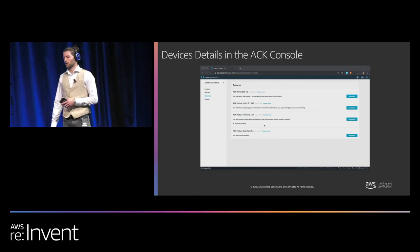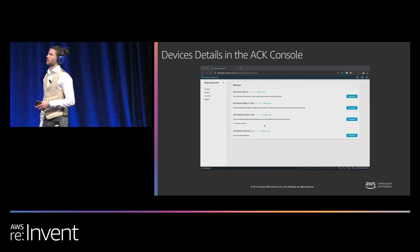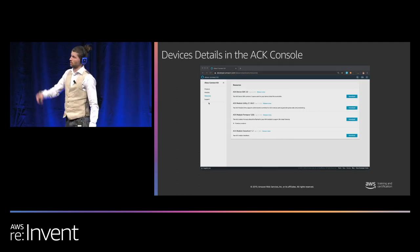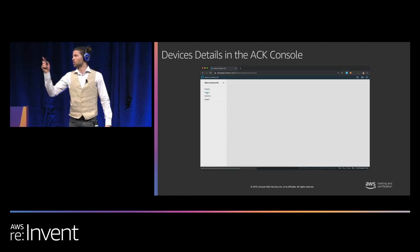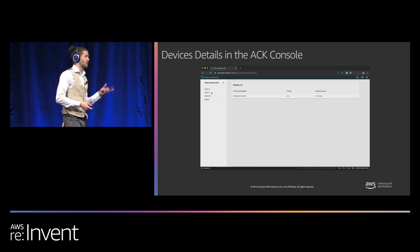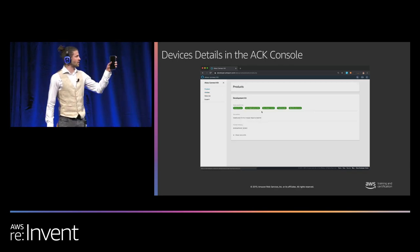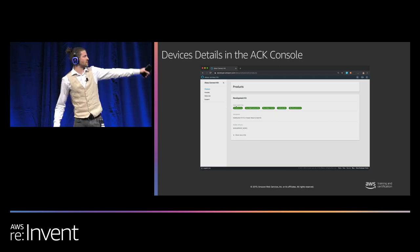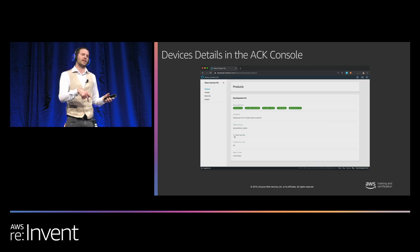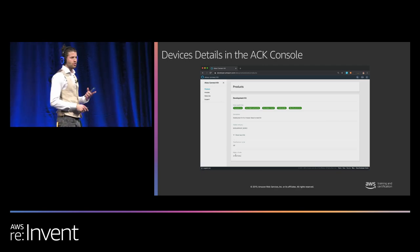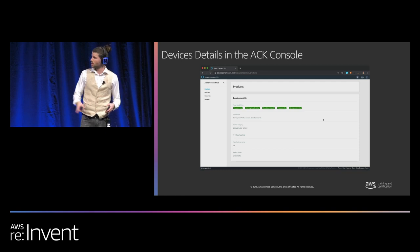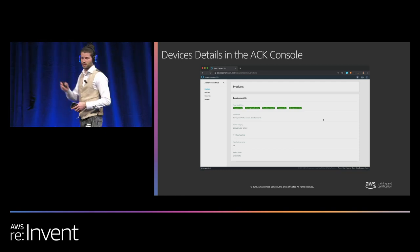We've registered our first device. Jumping back into the ACK Alexa Connected console, in the module section you can see your registered device. In the products section, as Mohamed pointed out, you can see the capabilities registered to that ACK device — power controller, mode controller, toggle controller — depending on what the device supports.